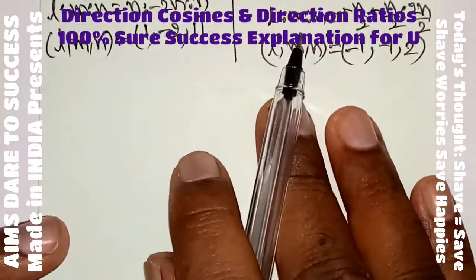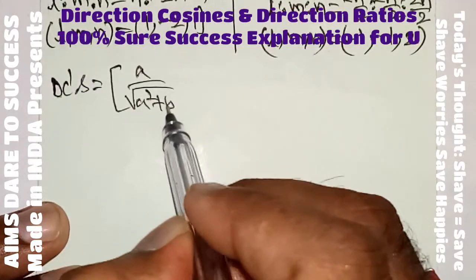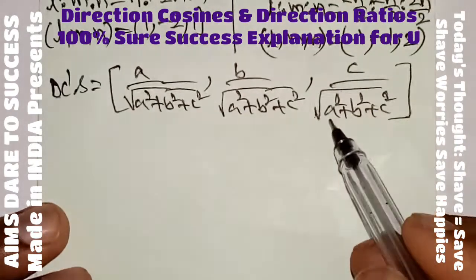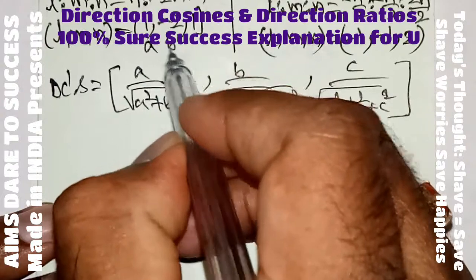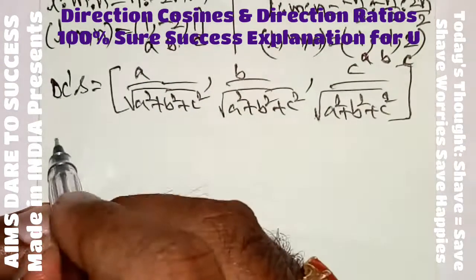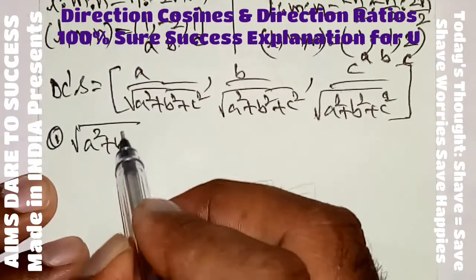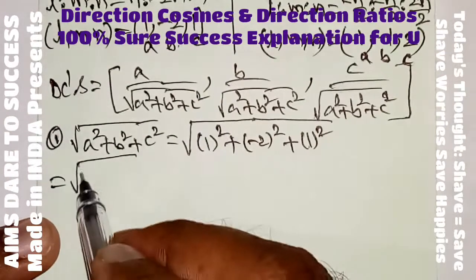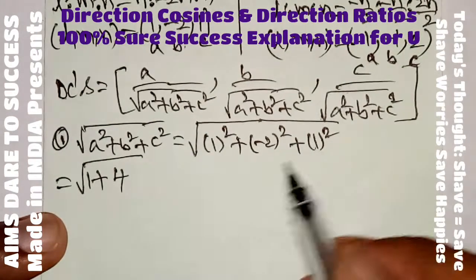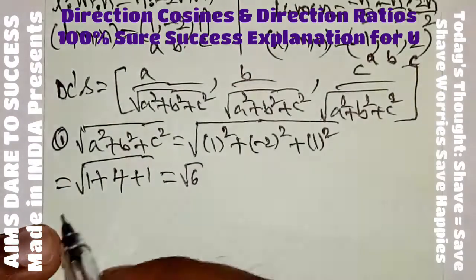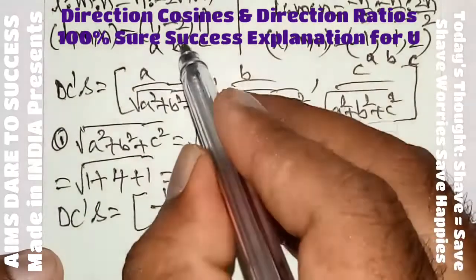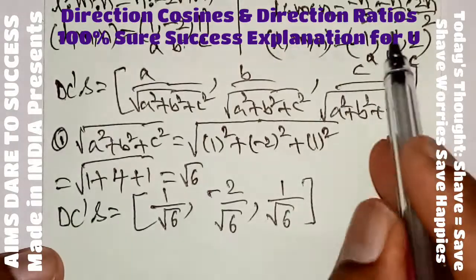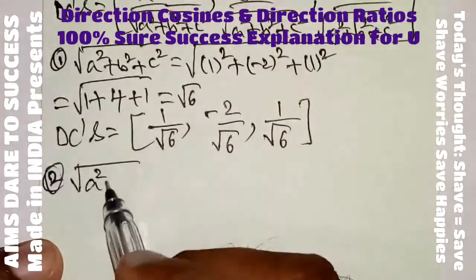Now to find direction cosines using the formula: a over root(a squared plus b squared plus c squared), b over root(a squared plus b squared plus c squared), c over root(a squared plus b squared plus c squared). For Case 1, with a equals 1, b equals minus 2, c equals 1: root(1 squared plus minus 2 squared plus 1 squared) equals root(1 plus 4 plus 1) equals root 6. So the direction cosines for Case 1 are 1 over root 6, minus 2 over root 6, 1 over root 6.